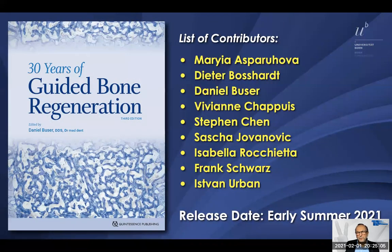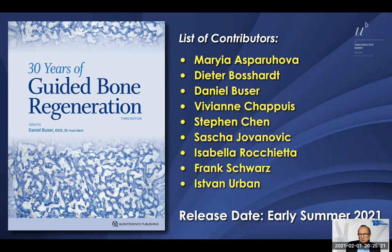I want to refer to the upcoming new third edition of the GBR book — '30 Years of GBR.' We have a fantastic list of contributors: besides the Bernese group, we have Stephen Chen, Sasha Jovanovic, Isabella Rocchietta, Frank Schwartz, and Istvan Urban — Champions League. The release date will be early summer 2021, end of June. All chapters have been submitted, though it was not easy given the pandemic.